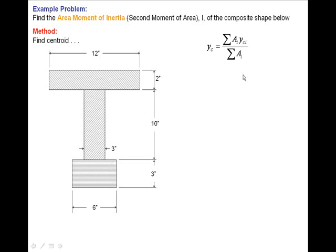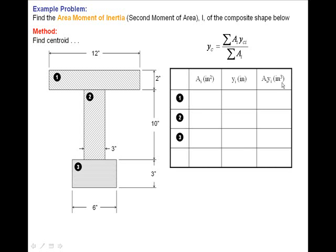Then using this equation to build a chart or a table, we'll populate that table with the area, the distance from whatever point of origin we choose, and the centroid of each individual section, and then we'll have the product of the area times that distance.